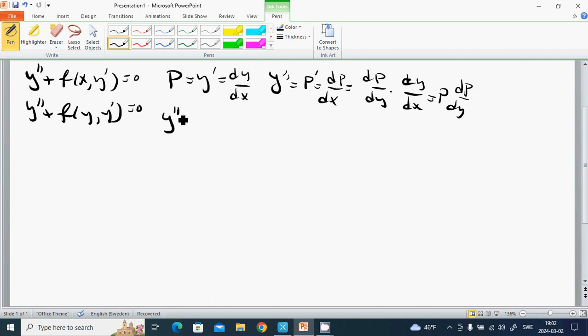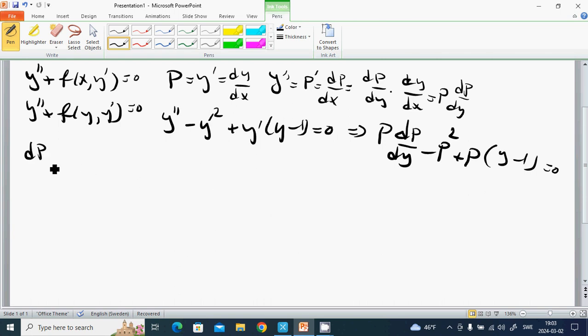And then we are going through another example: y'' - y'² + y'*y - 1 = 0. Then we have this one: P*dP/dy - P² + P*y - 1 = 0. Then we have dP/dy - P = 1 - y.